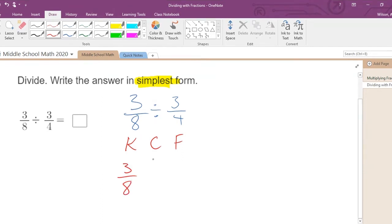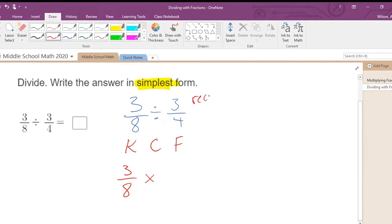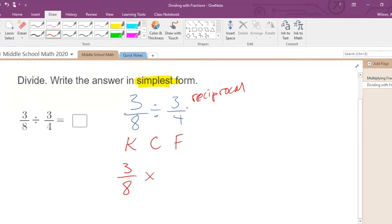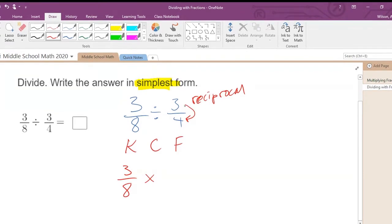You change division into its inverse, otherwise known as multiplication. And then three fourths, you flip it or you use the reciprocal, which is just a big fancy word for flipping the numerator with the denominator. So that becomes four thirds.